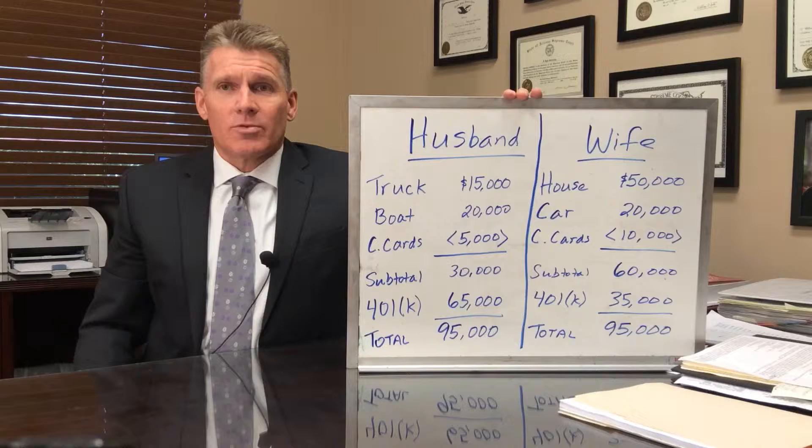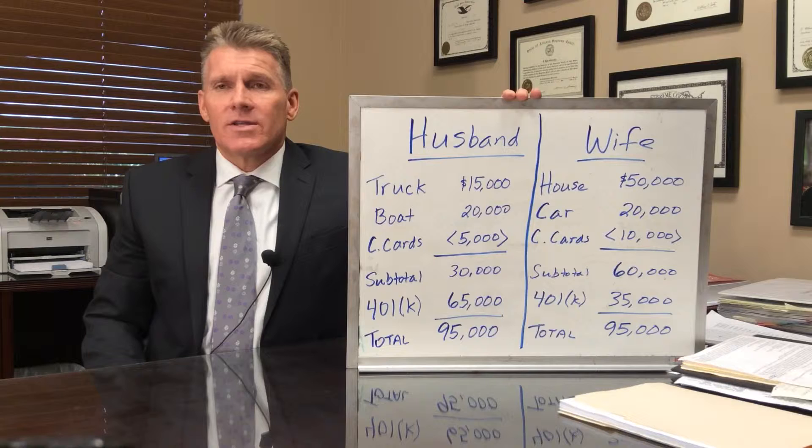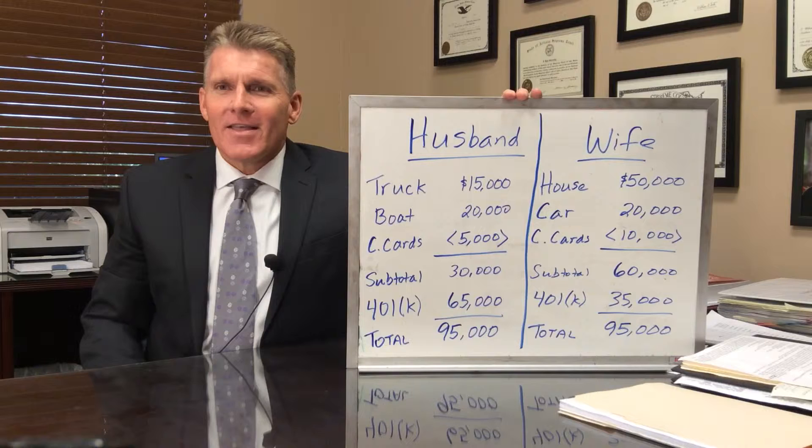Once those three steps are done — identifying the assets, categorizing them as marital property, and valuing them — then you're ready to go on to the actual division of assets itself. And remember, it's only the community property that gets divided. That's why we have to categorize things as separate or community.